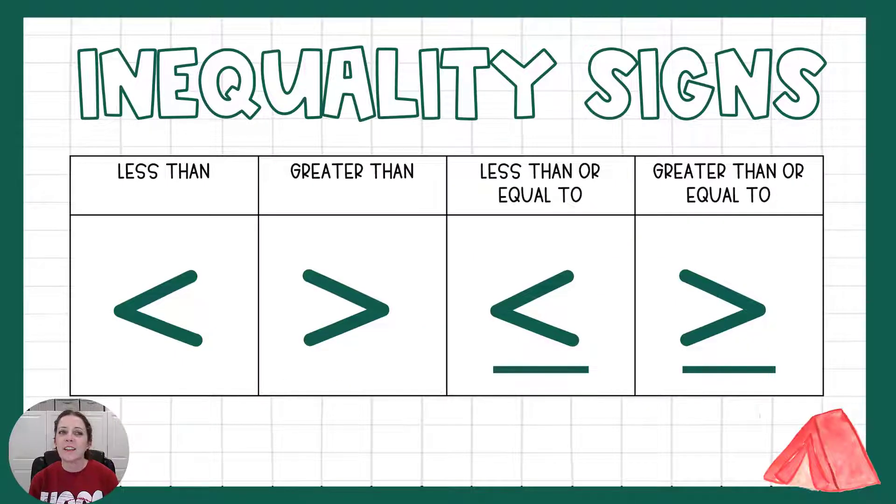So here are the four different signs. Again, we have less than, greater than, less than or equal to, and greater than or equal to. We would use inequalities in different situations. If I tell you, for example, on Today's Quizzes practice, you have to score at least 80%, that means you can score 80% or anything bigger. There's not one specific score that you have to get.